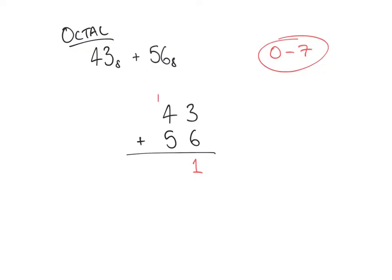In our second column we have 4 plus 5, plus the 1 that we've carried, giving us 10. Again, 10 is not a permissible digit, so we carry one lot of 8 again, which leaves us with 2, and 1 is carried to the next column. Finally the last column only contains 1, giving us 1 in the result. So 43 to the base of 8 plus 56 to the base of 8 gives us 121 to the base of 8.